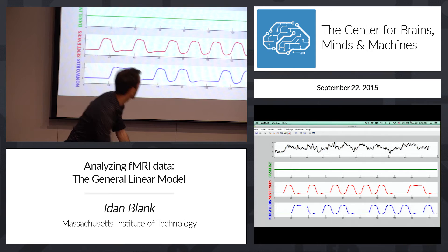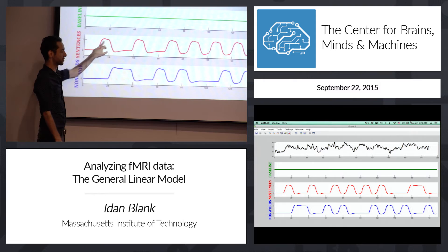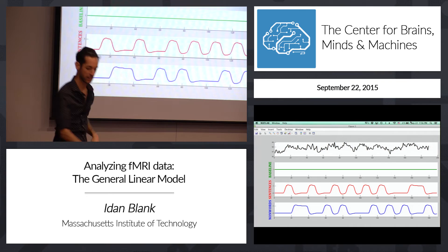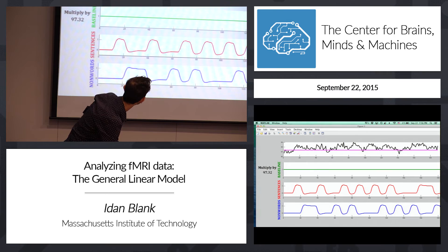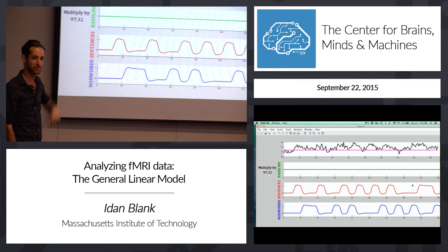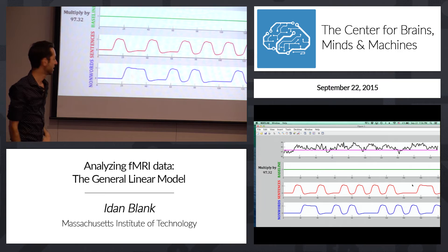What you see on top is the actual signal of a voxel from the brain, and then you see the baseline prediction, the prediction for changes when reading sentences, and the prediction for changes when reading non-words. To approximate the real signal, I multiply the baseline by 97, because the average of the real signal seems to be around 97. So I multiply the baseline constant by 97 and get a flat line around 97.